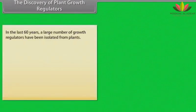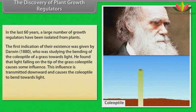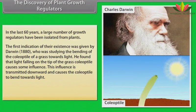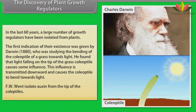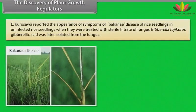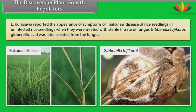In the last 60 years, a large number of growth regulators have been isolated from plants. The first indication of their existence was given by Darwin in 1880, who was studying the bending of the coleoptile of a grass towards light. He found that light falling on the tip of the grass coleoptile causes some influence that is transmitted downward and causes the coleoptile to bend towards light. F.W. Went isolated auxin from the tip of the coleoptiles. E. Kurosawa reported the appearance of symptoms of Bakanae disease of rice seedlings in uninfected rice seedlings when treated with sterile filtrate of the fungus Gibberella fujikuroi. Gibberellic acid was later isolated from the fungus.